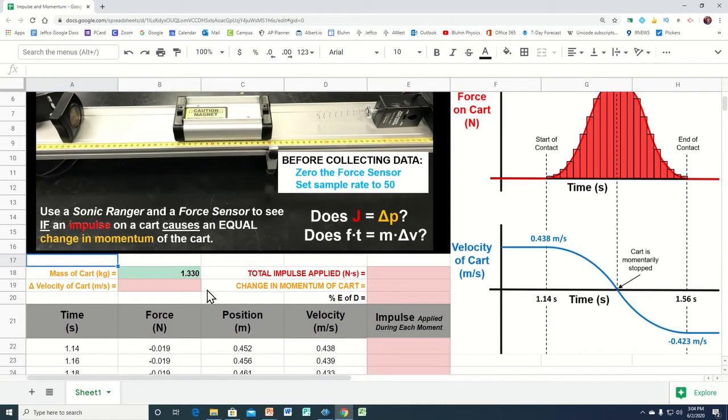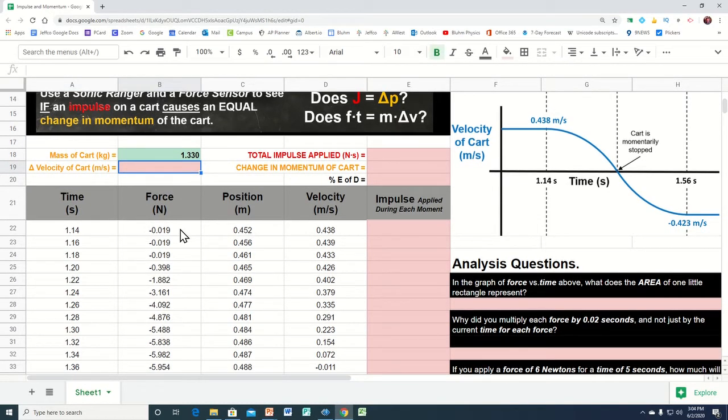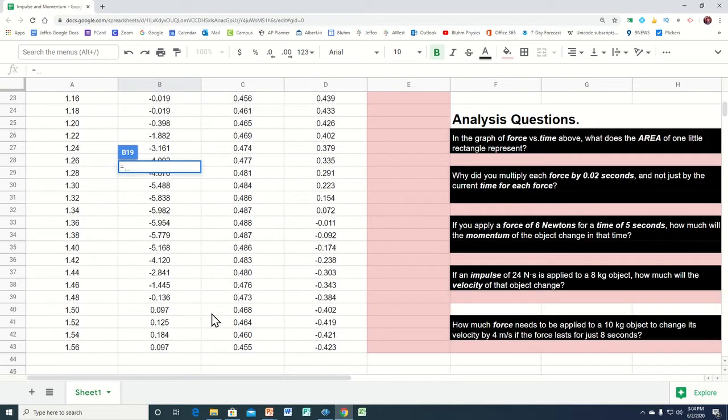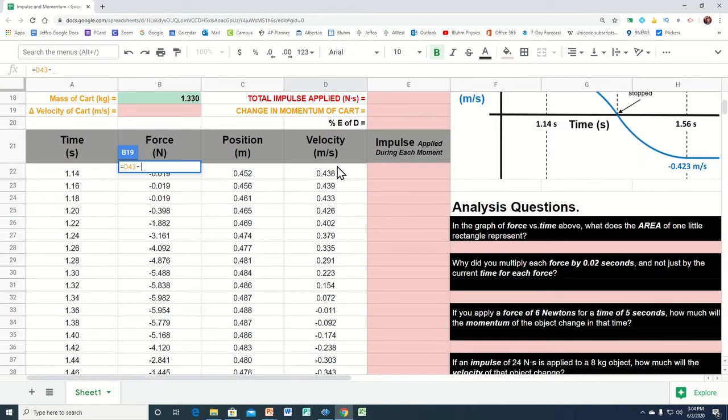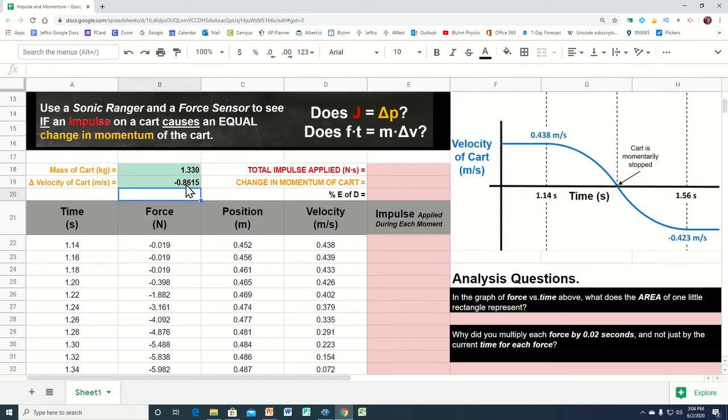We can calculate the change in velocity of the cart and we always calculate change by taking the final minus the initial. It's going to be a formula, so we're going to hit an equal sign and the change in velocity is going to be the final velocity, what it was here. I can just come down to here. At that time, it had this velocity. So that's final minus, up at the start here, that. And that is our change in velocity.